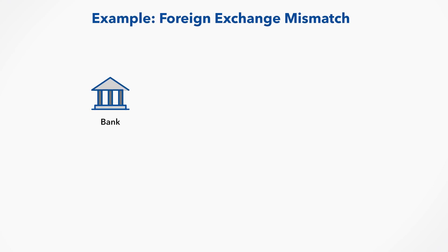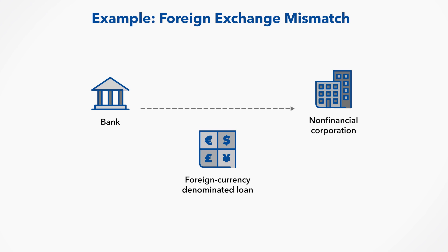To understand how a mismatch between the value of foreign currency denominated assets and liabilities results in foreign currency exchange risk, let's consider a simplified example. Consider a bank that has made a foreign currency denominated loan to a non-financial corporation in the amount of $100. For simplicity, assume that is the only foreign currency denominated asset of the bank.